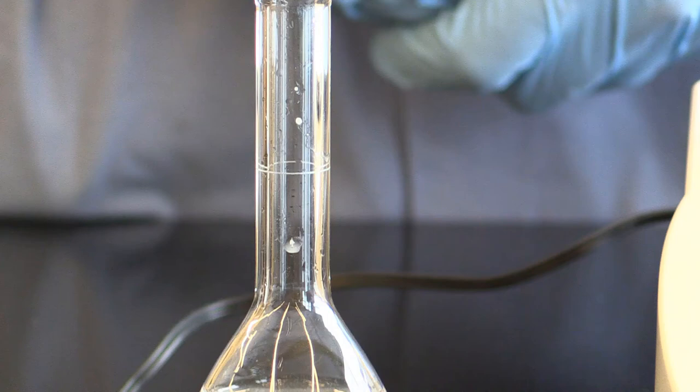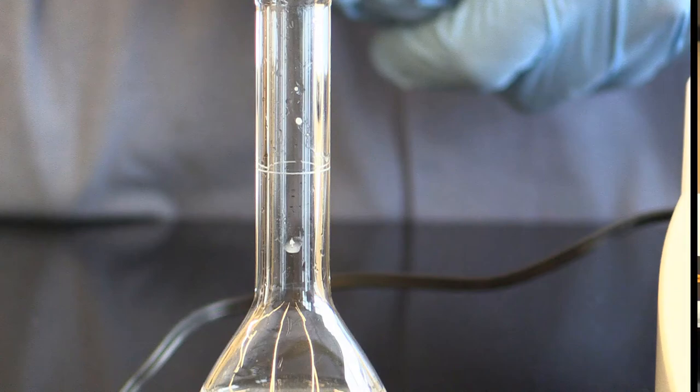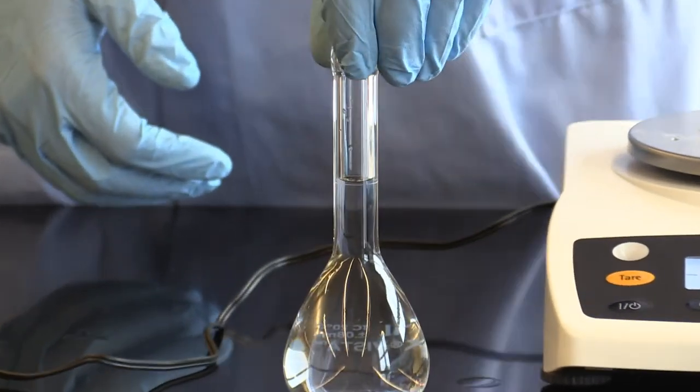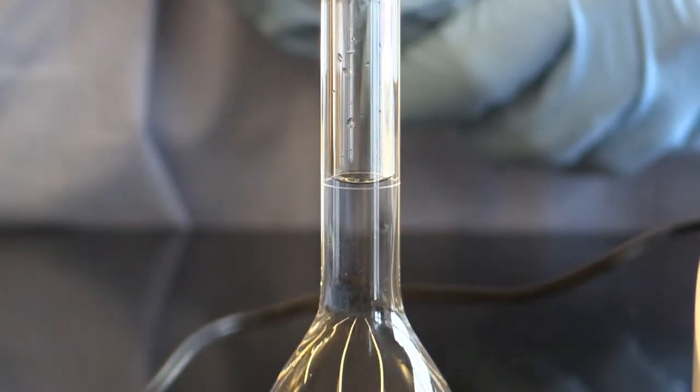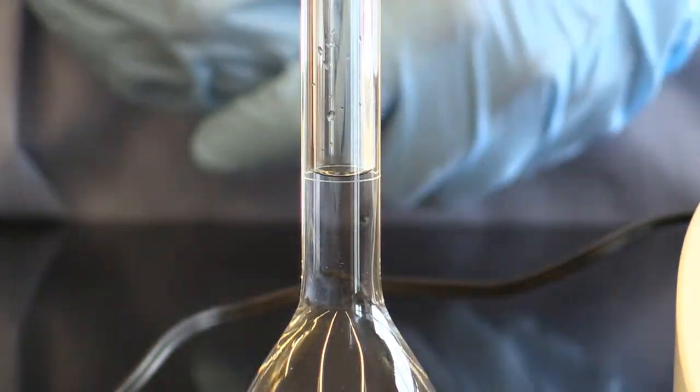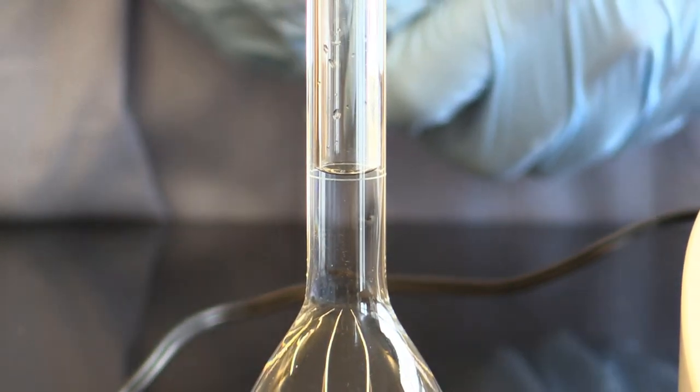You would either have to add a little bit more if the meniscus is under, or if the meniscus is over the line you will then have to redo it. So as you can see here, I have brought it up to the final volume, and that meniscus is touching—the bottom of the meniscus is touching that line—which means I don't have to repeat it.